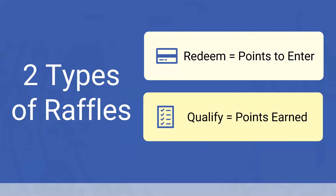We have two types of raffles. The first type is called a redeem raffle. This is where the raffle costs points for the student to enter from their point balance, just like a traditional raffle. An example of this would be a student using their points to enter the raffle to earn a new bike.